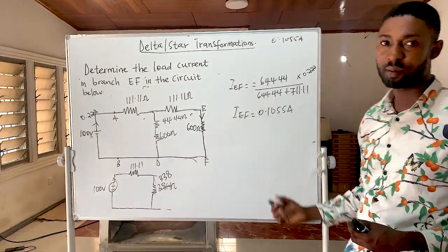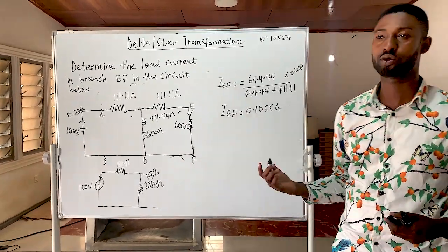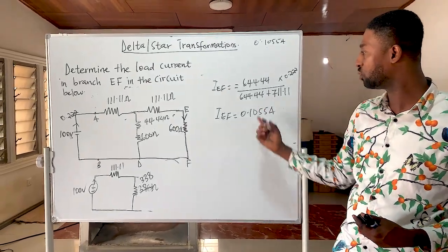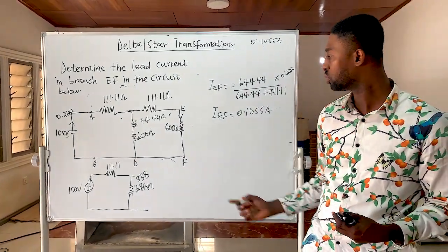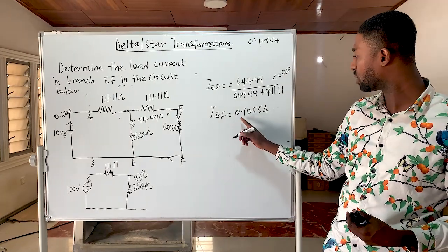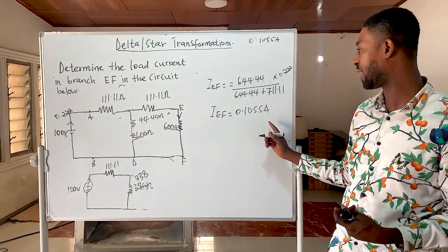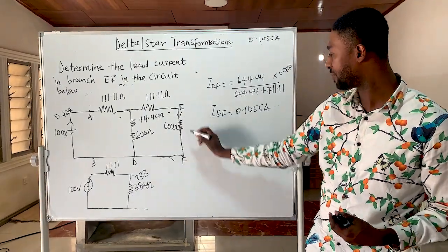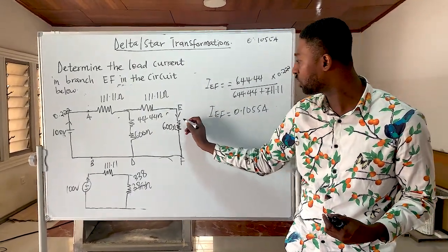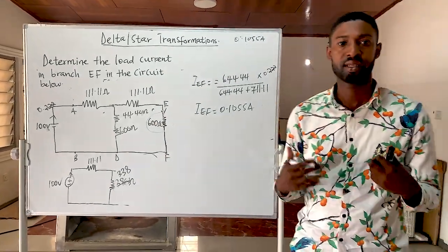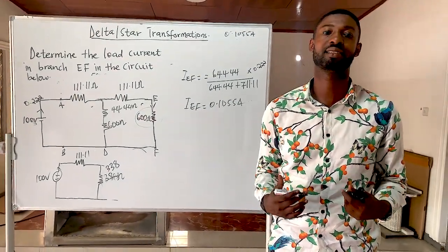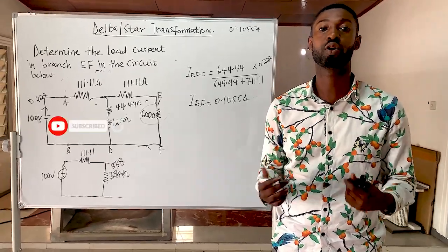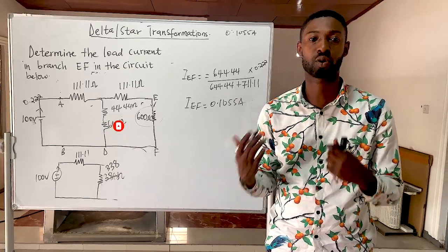For those not familiar with the current divider rule, you can check my video on that topic. The final answer is 0.1055 amps — that is the current flowing through branch EF, which is the same current flowing through the 600 ohm resistor. Thank you for watching KenTech1916, and please recommend the channel to your classmates.